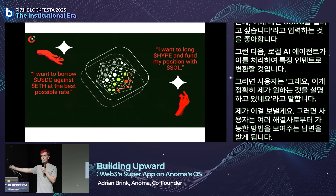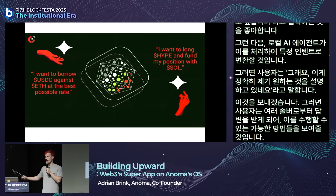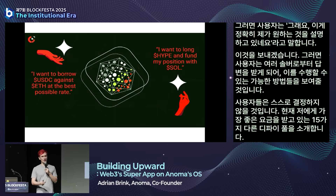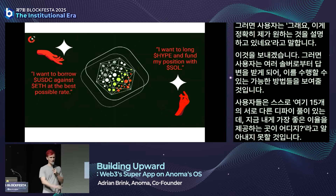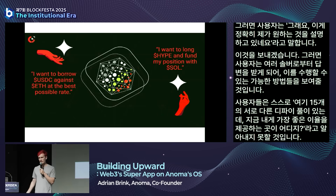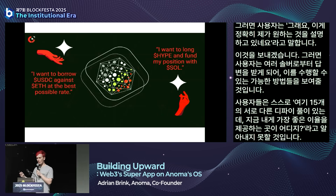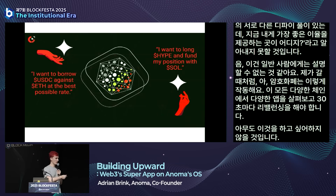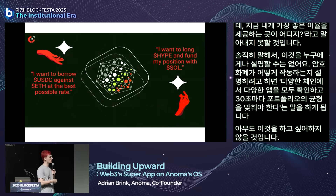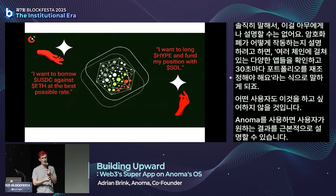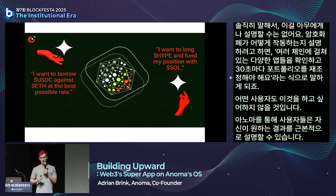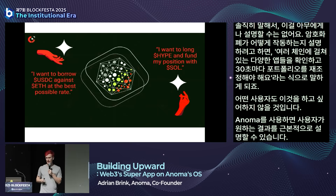Users aren't going to figure out themselves which of 15 different DeFi pools has the best rate. I can't explain this to any normal person—telling them they should look at all these different apps on all these different chains and rebalance every 30 seconds. No user will want to do this. With Anoma, users can describe fundamentally the outcome that they want. They don't have to worry about the specific execution trace—they describe an outcome rather than a computational trace of how to get there.